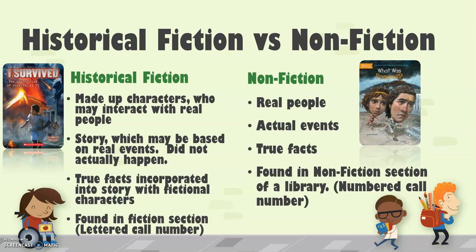Historical fiction and nonfiction are shelved in different places at the library. You'll find historical fiction books like I Survived: The Destruction of Pompeii in A.D. 79 in the fiction section. If you look on the spine of your book, it'll have a letter call number — the number or letter that tells us where to find it in the library. A fiction book has all letters for the call number. Nonfiction is in the nonfiction section, the true section of the library, and its spine sticker has numbers for a call number.